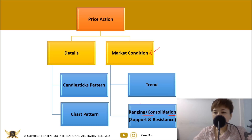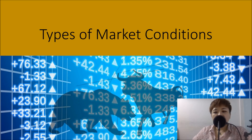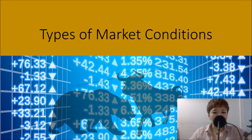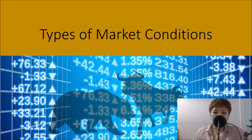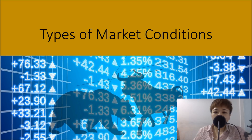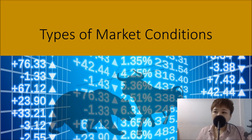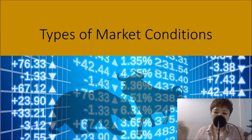To become a successful price action trader, you need to understand the different types of market conditions. It's just like driving a sports car — when you reach the highway you change to a different gear, but on a narrow road with lots of cars you drive differently. The same applies to trading: in a trending market you use different tools, and in a ranging market you trade differently.